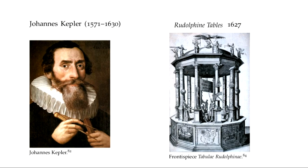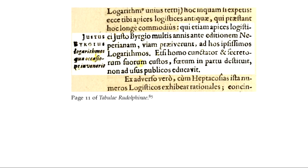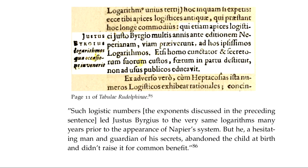The Rudolphine Tables allowed you to compute the position of any major star or planet for any point in time, seen from any position on Earth. There is one paragraph in that book mentioning Bürgi — Justus Bürgi in Latin. In Ian Bruce's translation it reads: "Such logistic numbers… let Justus Bürgi is to the very same logarithms many years to the appearance of Napier's system, but he, a hesitant man and guardian of his secrets, abandoned the child at birth and didn't raise it for common benefit." Two complaints from Kepler: he didn't publish in time, and he didn't do anything with it.